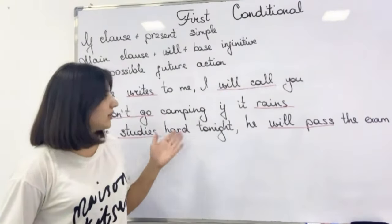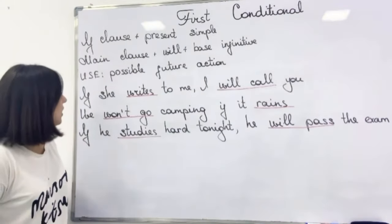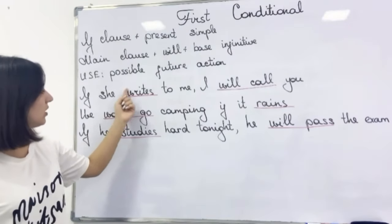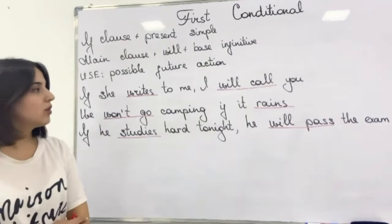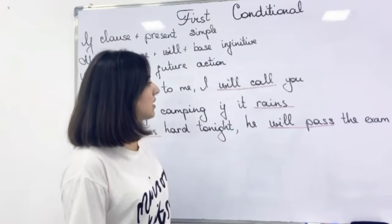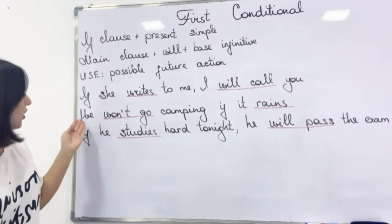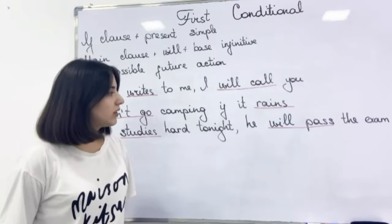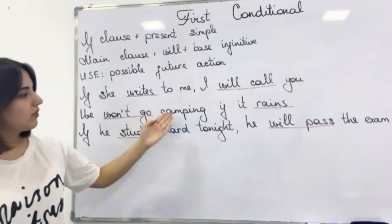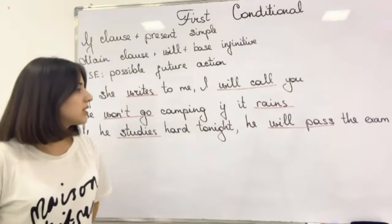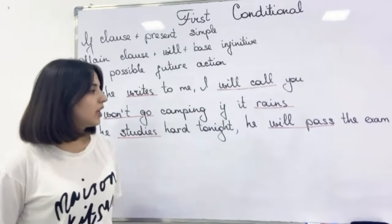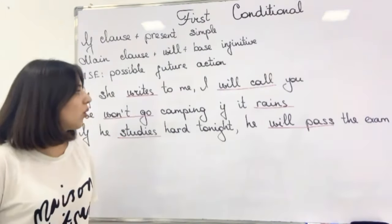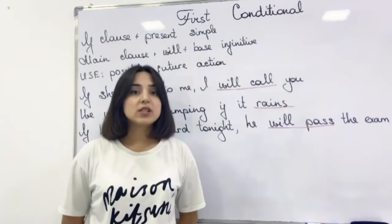I've written three simple sentences about first conditional. Let's read them. If she writes to me, I will call you. In the if clause I have used present simple, and in the main clause we use will plus base infinitive. Again: we won't go camping if it rains — 'won't' is a contracted form of 'will not'. Again, will plus base infinitive and present simple tense form in the if clause. If he studies hard tonight, he will pass the exam. 'Studies' is present simple and we have will plus base infinitive. So they will all possibly happen in the future and we will see their consequences.